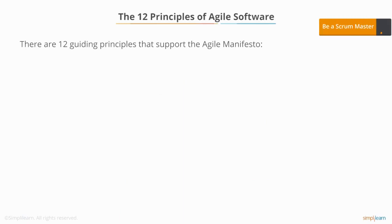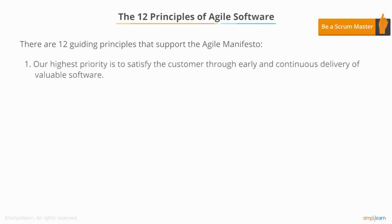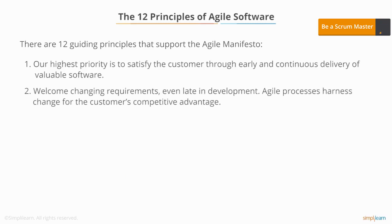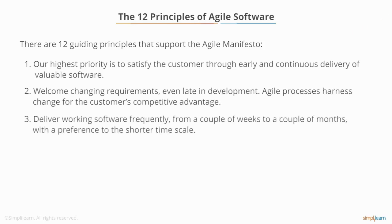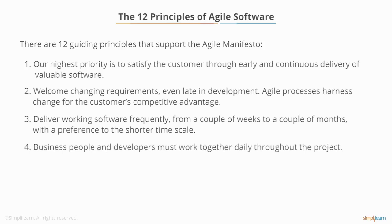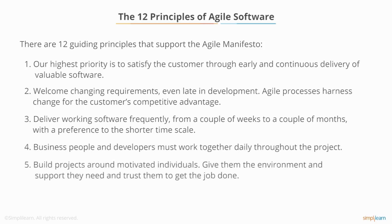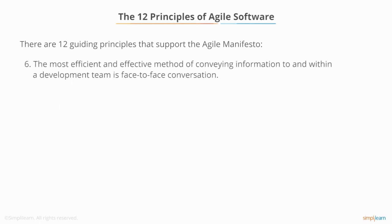There are also 12 guiding principles that support the Agile manifesto. One: our highest priority is to satisfy the customer through early and continuous delivery of valuable software. Two: welcome changing requirements even late in development — Agile processes harness change for the customer's competitive advantage. Three: deliver working software frequently, from a couple of weeks to a couple of months, with a preference to the shorter time scale. Four: business people and developers must work together daily throughout the project. Five: build projects around motivated individuals, give them the environment and support they need, and trust them to get the job done. Six: the most efficient and effective method of conveying information to and within a development team is face-to-face conversation.